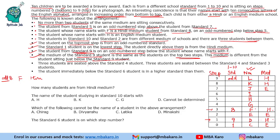Three students are seated above the standard 4 student, and there are three students between standard 4 and standard 3. Three above standard 4 means standard 4 is on step 6. With three students between standard 4 (step 6) and standard 3, standard 3 must be on step 2. We still need to place standards 2, 5, 6, 7, and 10 — and step 9 must hold an odd-numbered standard. The last condition says the student immediately below standard 6 is from a higher standard.